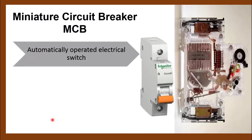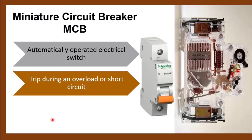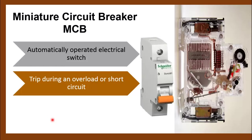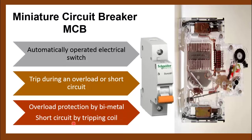The circuit breaker is also an automatically operated electric switch. The purpose of the circuit breaker is to break or trip the circuit during an event of overload or short circuit. Overload means the load is drawing excessive current more than its rated current — an abnormal condition. Short circuit means the phase is connected with the ground, causing excessive current to flow through the load.